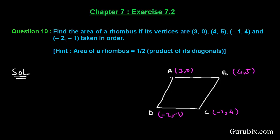We have to find the area of rhombus ABCD. We can find it in two ways: by finding the area of one of the two triangles formed by a diagonal and multiplying by 2, or by using the formula that the area of a rhombus equals one-half times the product of its diagonals. We shall apply this formula here.